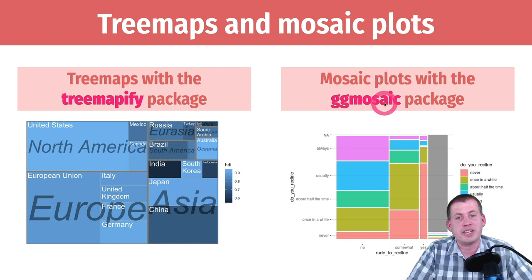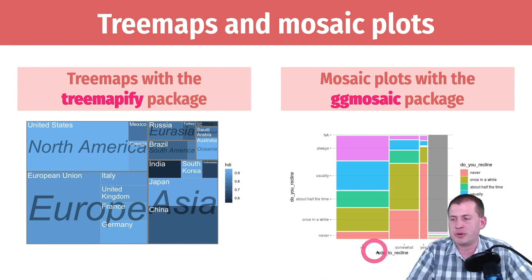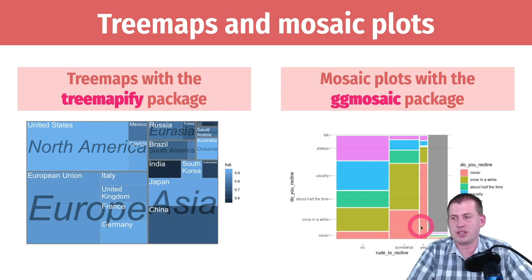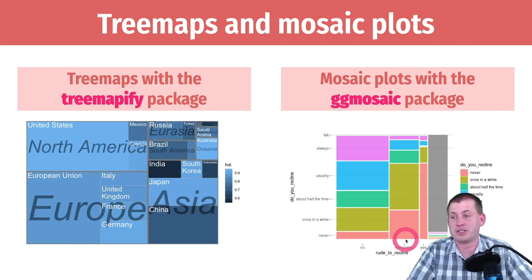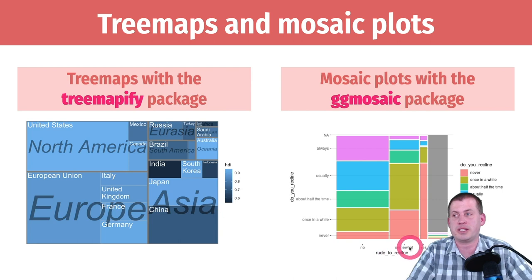You can also use mosaic plots, which are kind of the same idea — where you have columns along the x-axis whose width is sized according to how many responses said 'somewhat rude to recline' or 'not rude to recline' in an airplane seat.